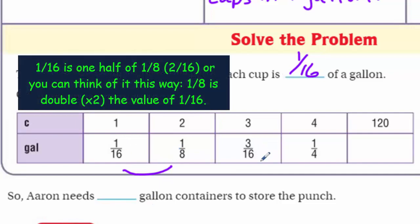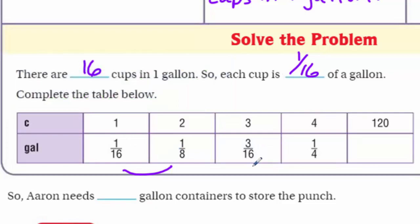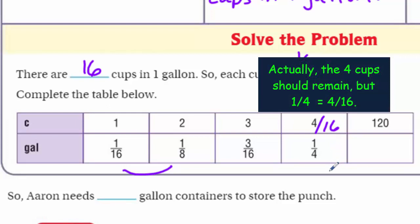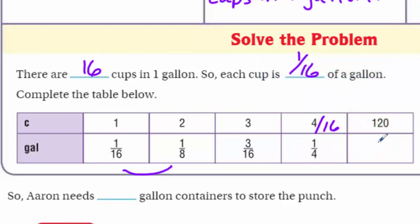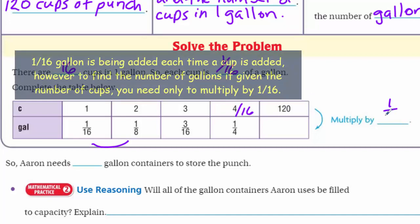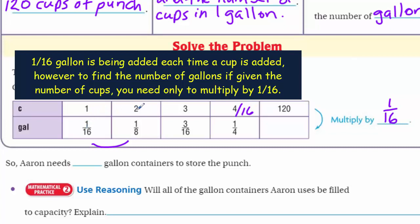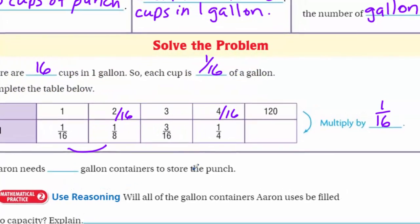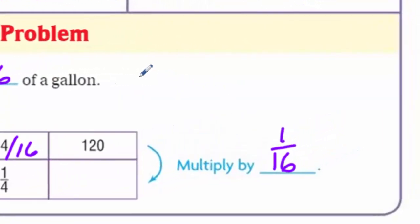Three cups compared to a gallon would be 3/16. Four cups of one gallon would be 4/16 — everything's over 16 because that's how many cups are in one gallon — but we can reduce: 4/16 is equivalent to 1/4 by dividing by four. Now, if you have 120 cups, how many gallons are you going to have? We're multiplying by 1/16 every time, since that's the amount being gained. So we need to take 120 times 1/16.